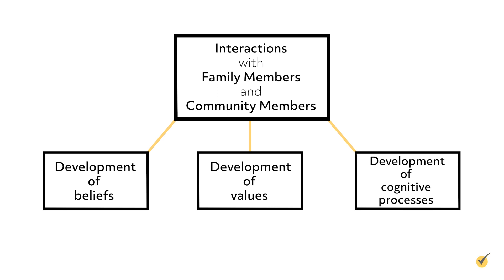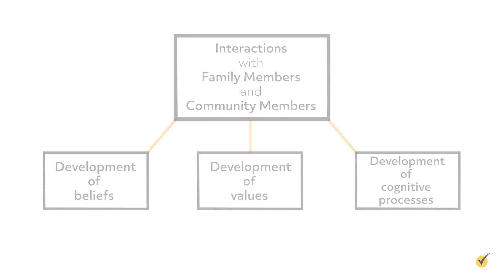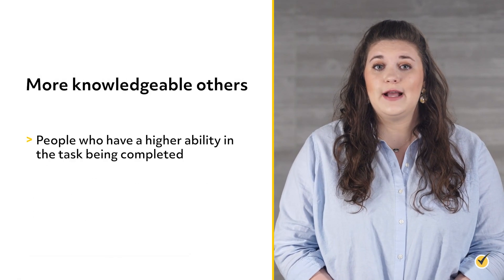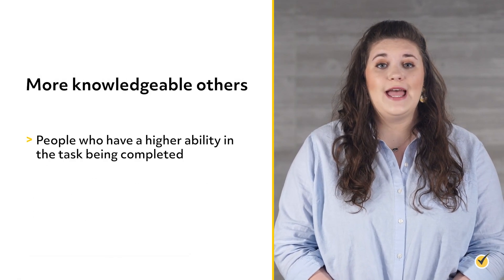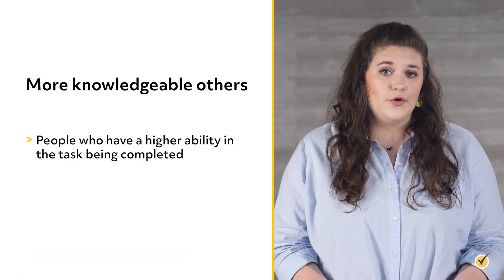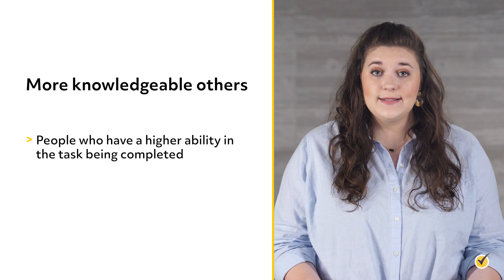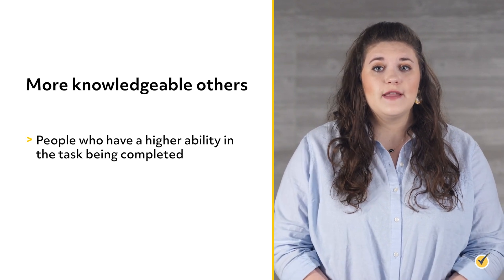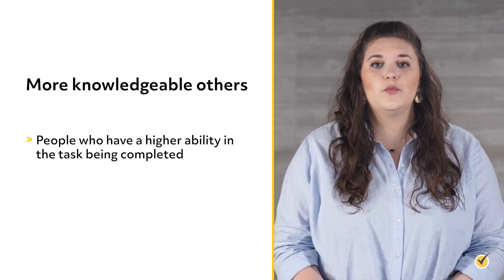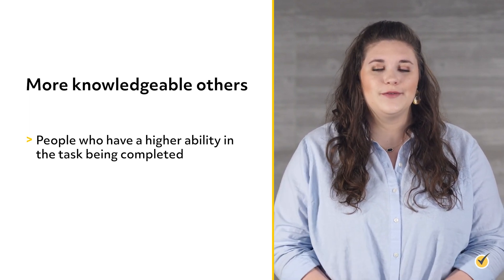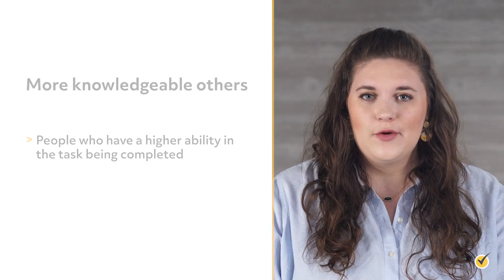This social interaction influences the ways children make sense of their surroundings and develop problem-solving skills. Vygotsky's theory suggests that this development occurs best under a couple of conditions. First, children must interact with people known as more knowledgeable others. Next, learning experiences must occur in the Zone of Proximal Development. Let's explore each of these conditions now.